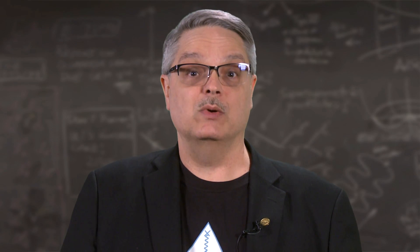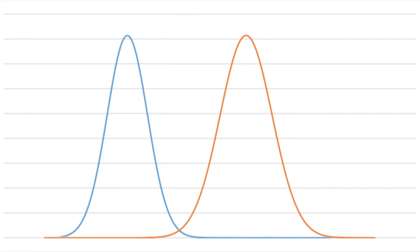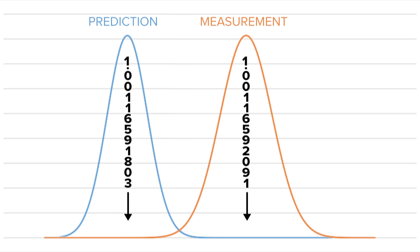What's more interesting is when you take into account the uncertainties of the prediction and the measurement. I've decided to show you what's going on by using these curves. The blue one to the left is the prediction, and the orange one to the right is the measurement.